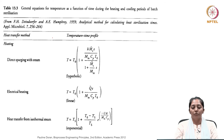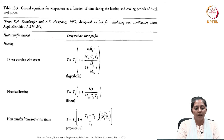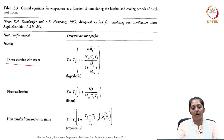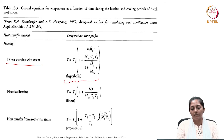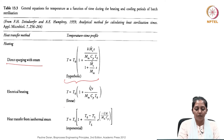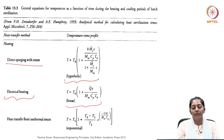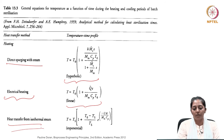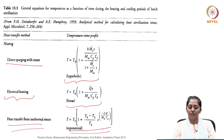Bringing it into a mathematical form, here are some examples. If the heat transfer method is direct sparging with steam, then this will be the hyperbolic function with respect to time. Similarly, electrical heating follows a linear function, and for heat transfer from an isothermal steam source, the function is an exponential function.